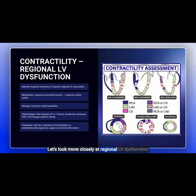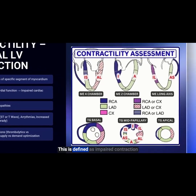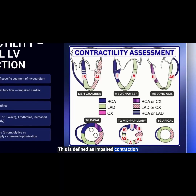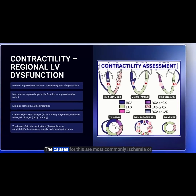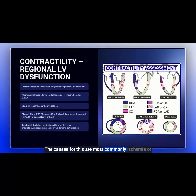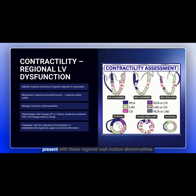Let's look more closely at regional LV dysfunction. This is defined as impaired contraction in a specific segment of myocardium. The causes for this are most commonly ischemia or myocardial infarction, or certain cardiomyopathies that present with regional wall motion abnormalities.